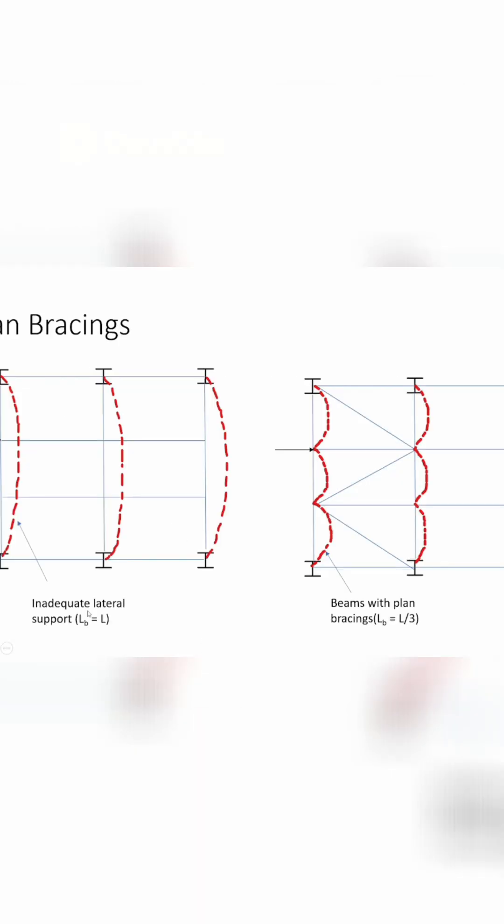In the first figure, as you can see the plan of the floor, we have not provided any plan bracing. If I apply any horizontal load, then you can see that it is deflecting like this, as you can see in the red dotted line.